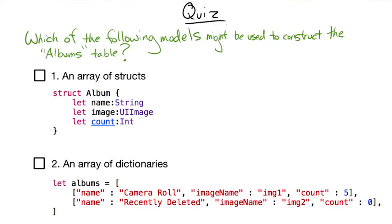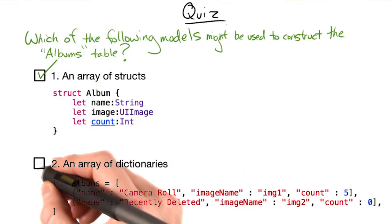We can only speculate about the real photo app code, but it's probably something like the array of structs. But for many tables, the dictionary technique would work fine.